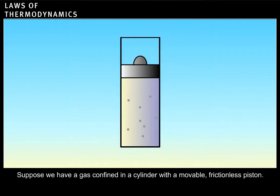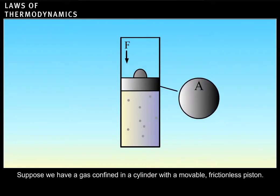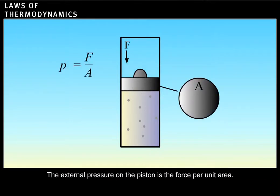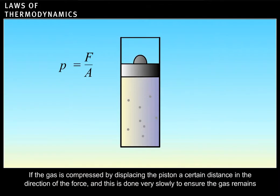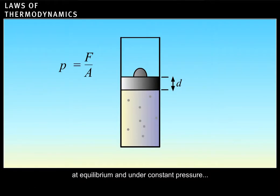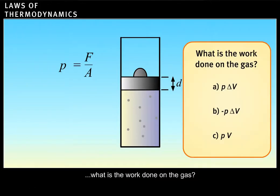Suppose we have a gas confined in a cylinder with a movable, frictionless piston. The external pressure on the piston is the force per unit area. If the gas is compressed by displacing the piston a certain distance in the direction of the force, and this is done very slowly to ensure the gas remains at equilibrium and under constant pressure, what is the work done on the gas?